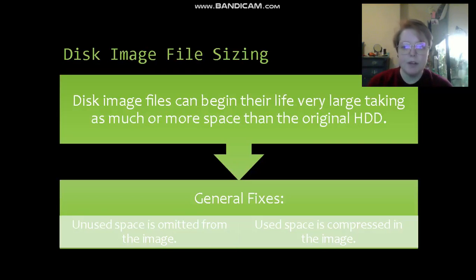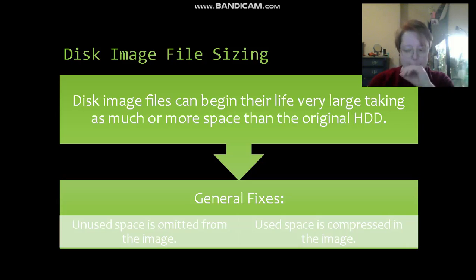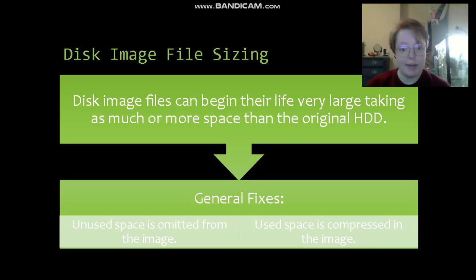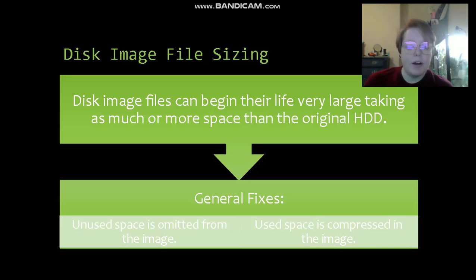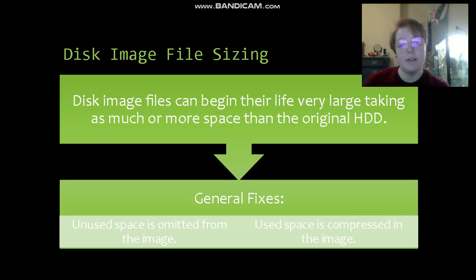Next we're going to talk about disk image file sizing. Disk images can run very large because they have to copy not only all the information on an HDD or optical disk, but also the storage structure on the disk and the data regarding that — so they can run from the size of the original HDD to even larger. General fixes for this include omitting unused space from the image: if certain bits show no information being used, those are omitted. The other fix is to compress the used space in an image, which saves tons of space, though unfortunately it does not reduce the time it takes to create the disk image.